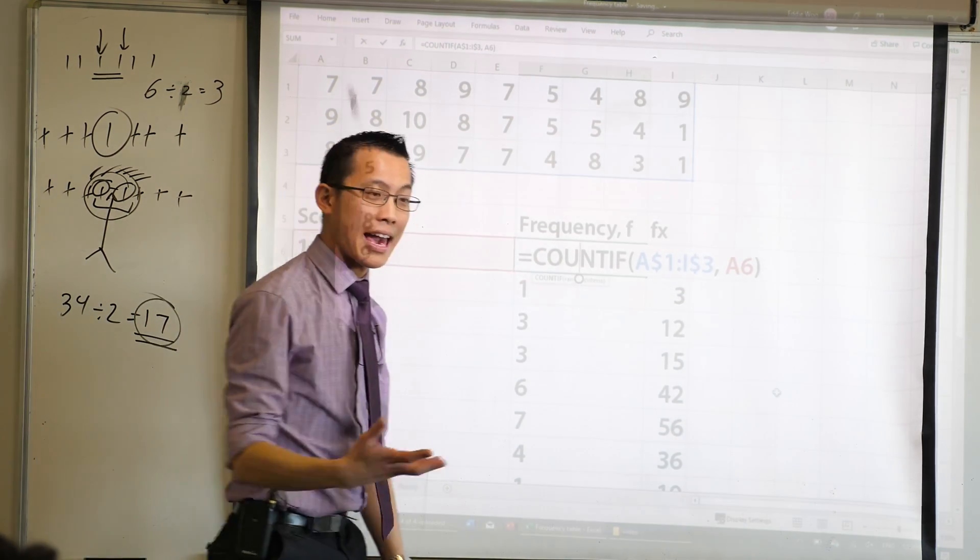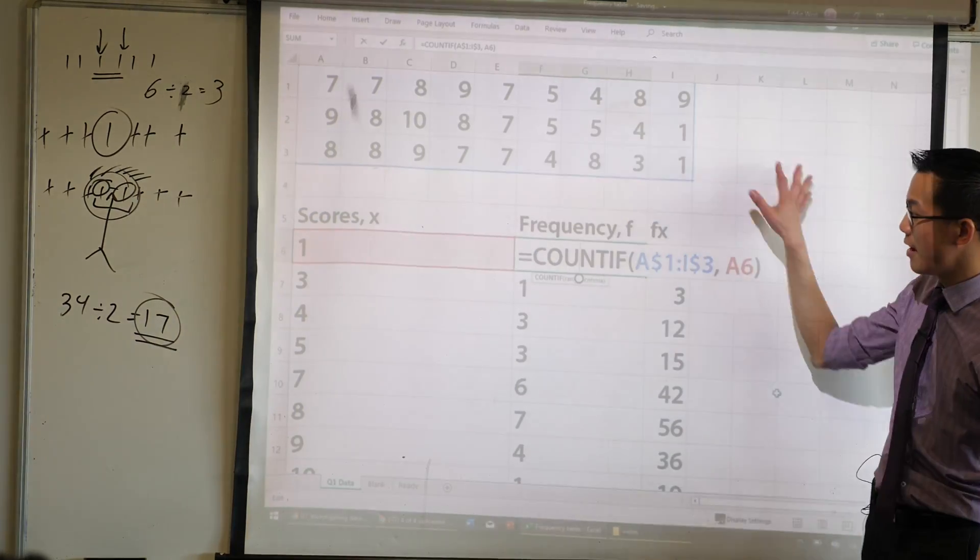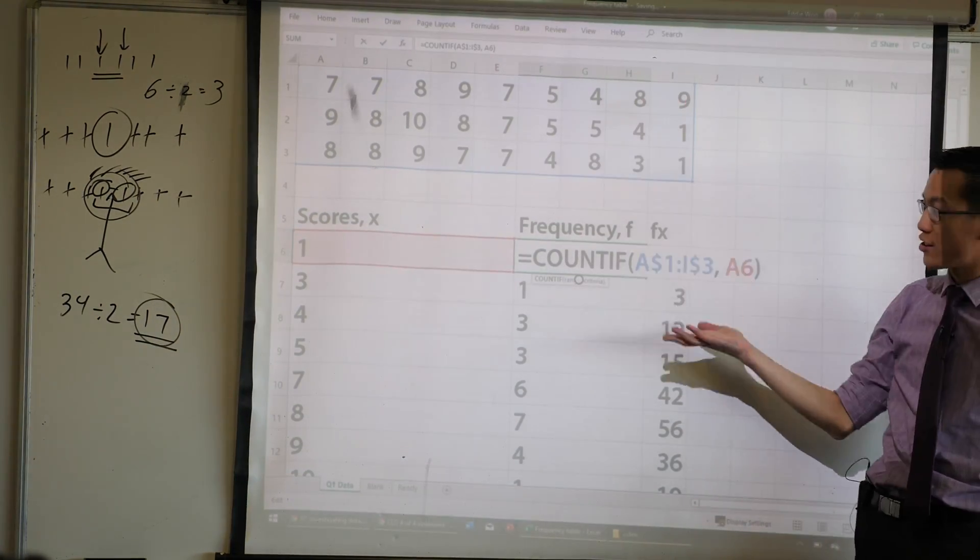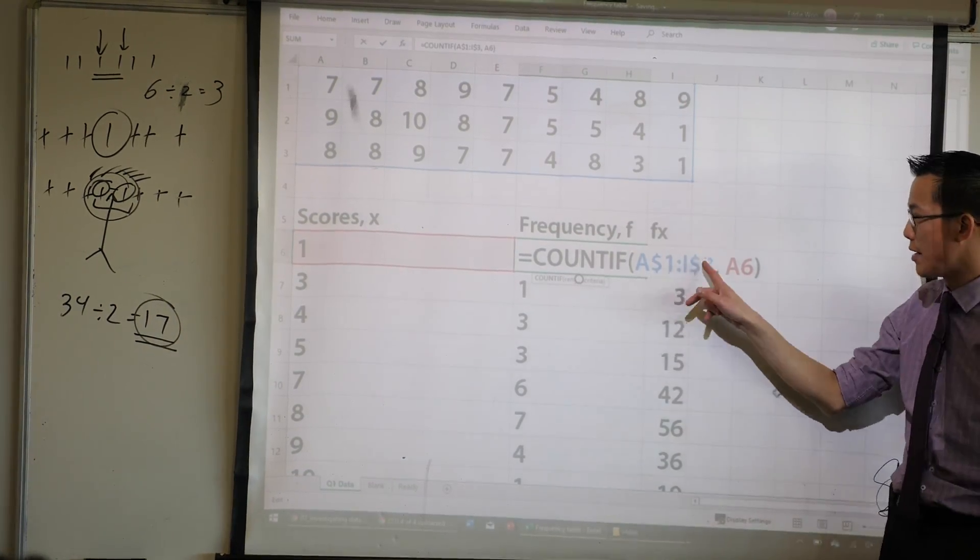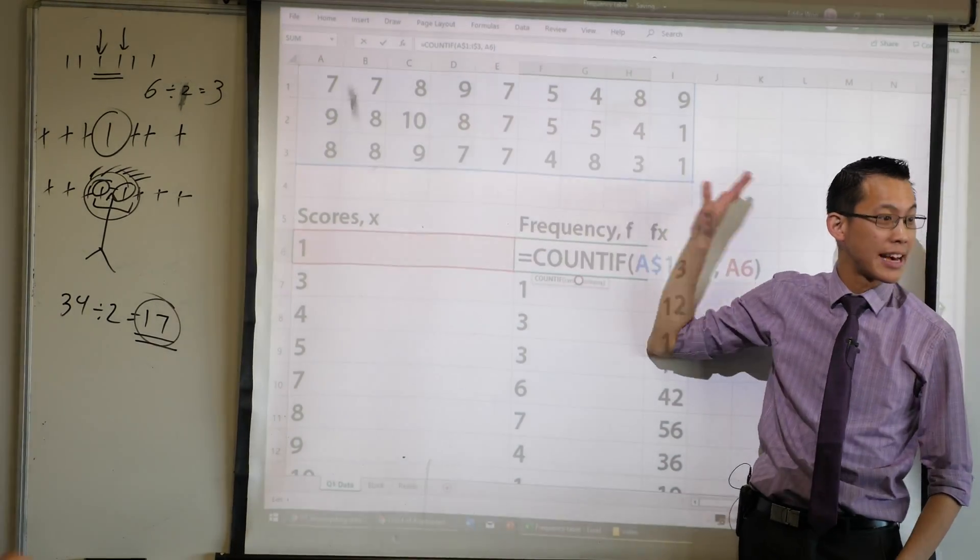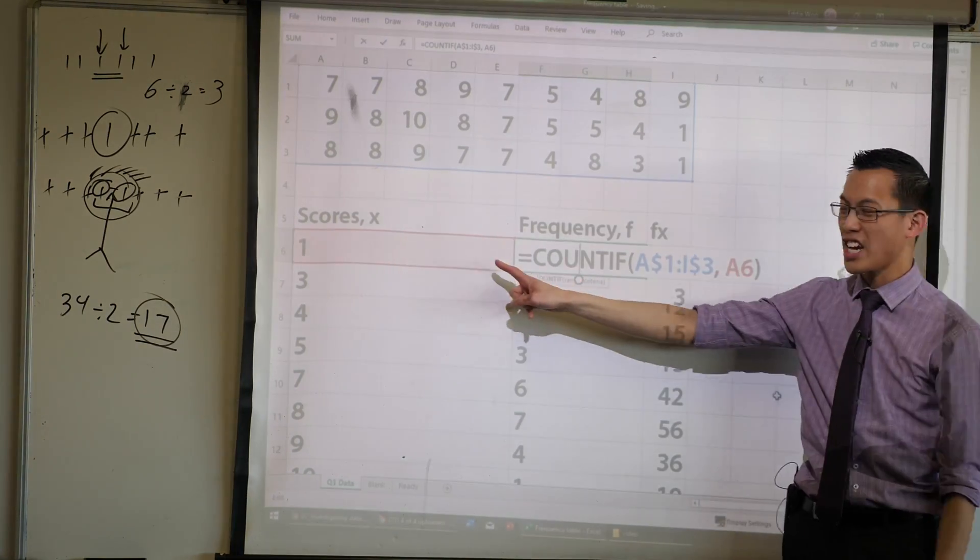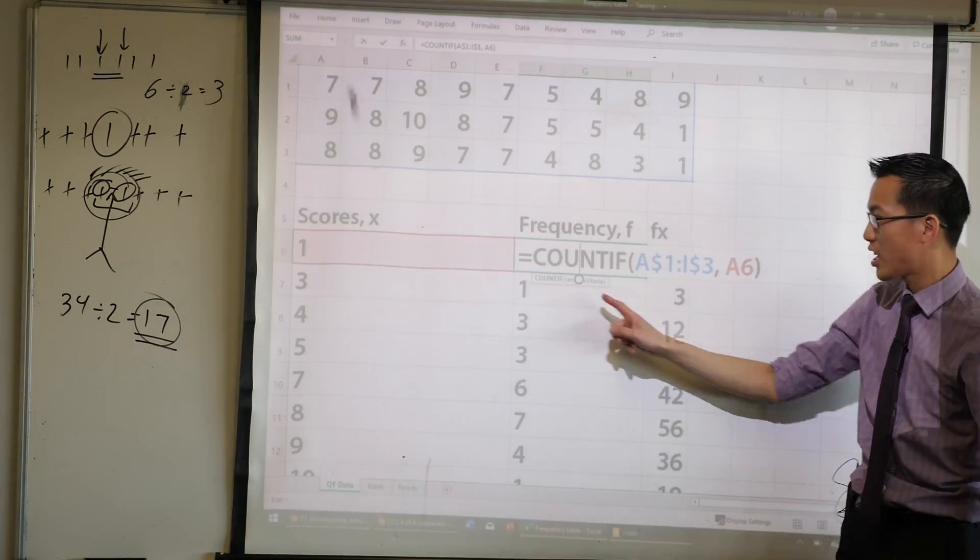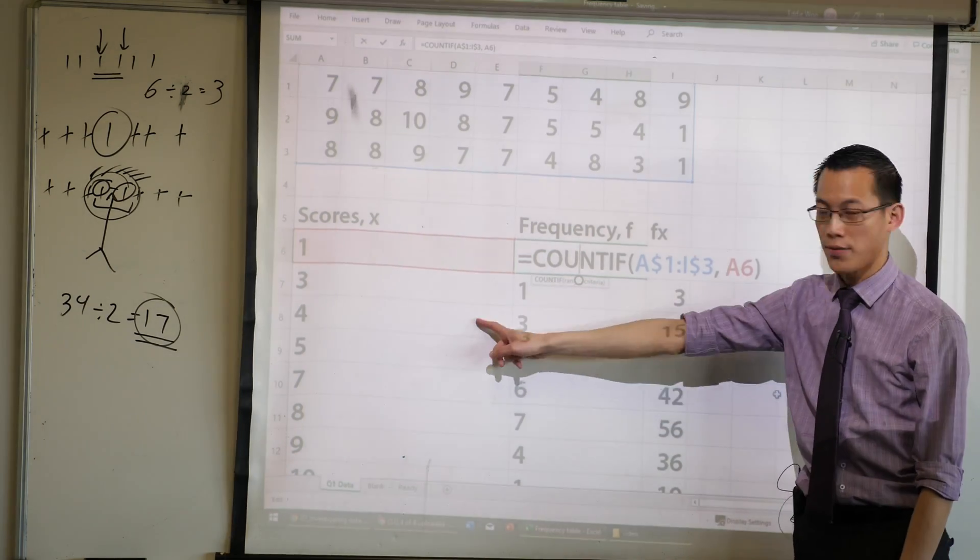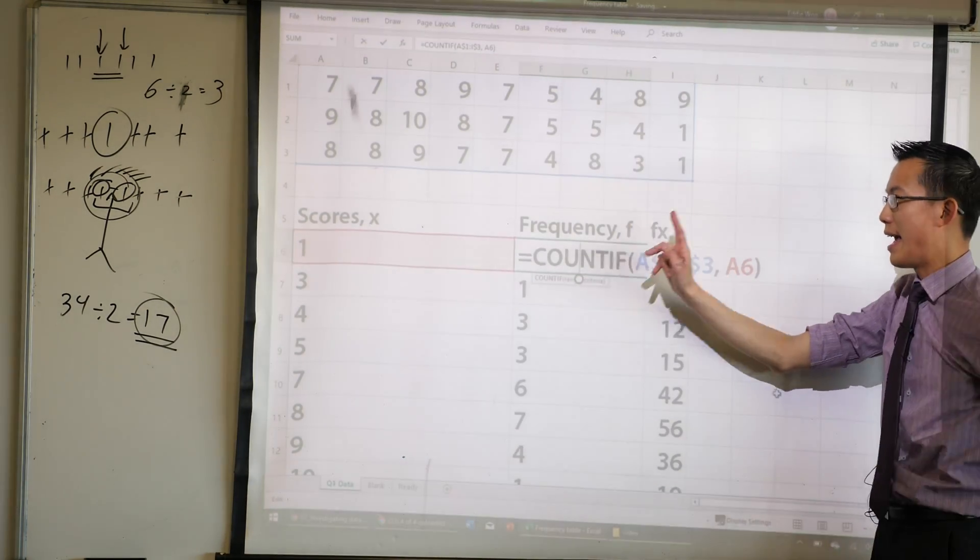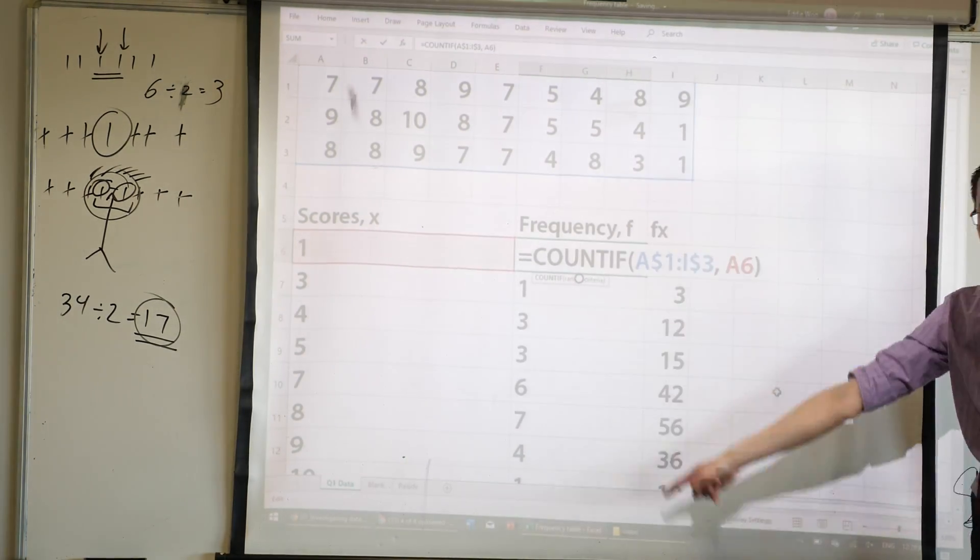It is counting up here if these cells match a certain condition. In this case, the blue thing is, look at all those cells up there. That's where I want you to look, Excel. And then this one is, check if it's 1. Or check if it's 3. Or check if it's 4. So it looks through all of them, and it counts up, and then it has these values for me.